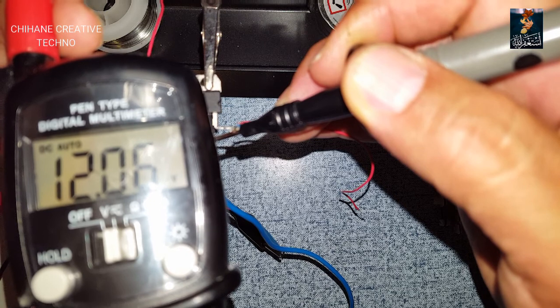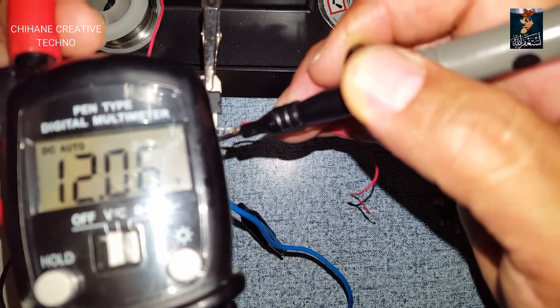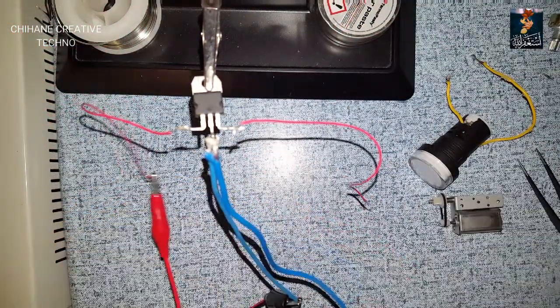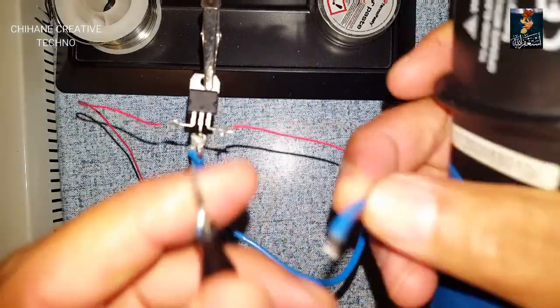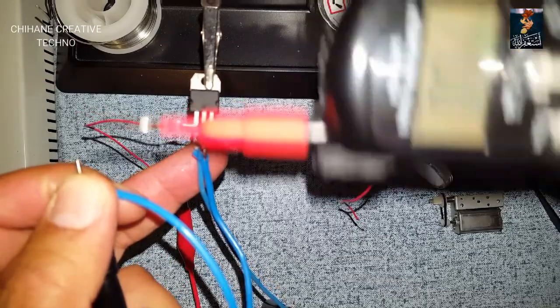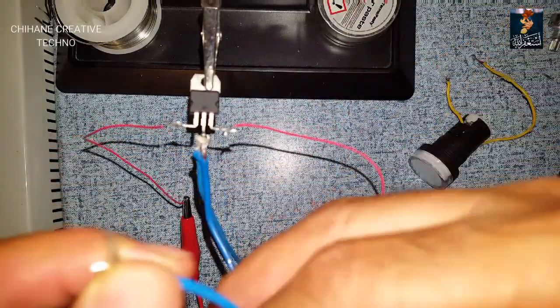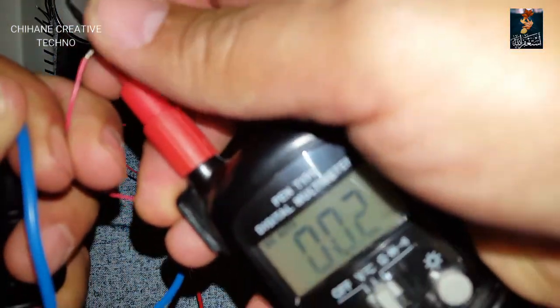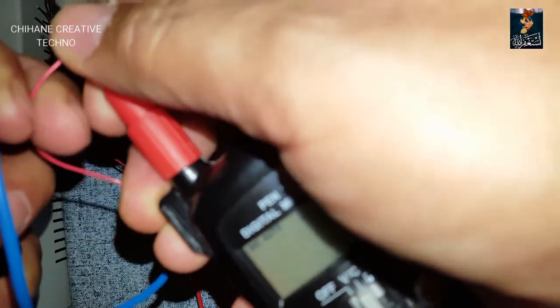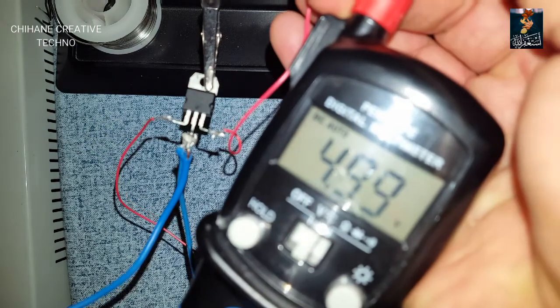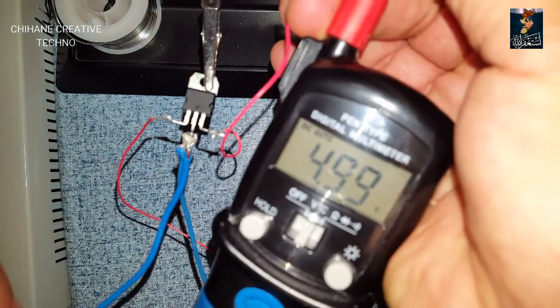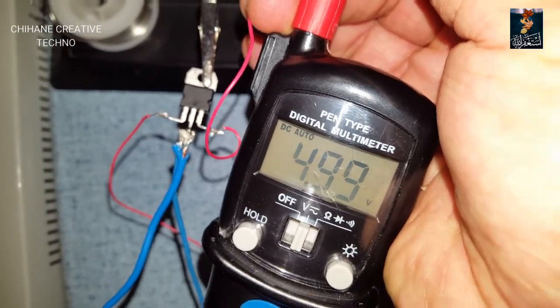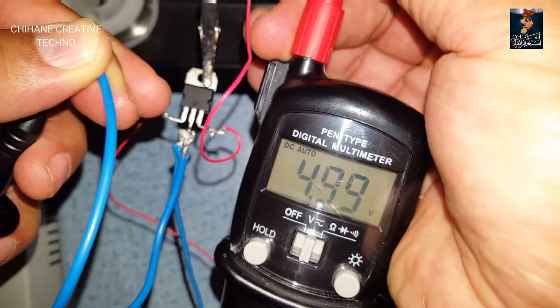So as you can see, this is the 12.06 volts—this is the input. So now the output. Let's see how much. So it's 4.99, plus 5 volts. It's giving me 5 volts.